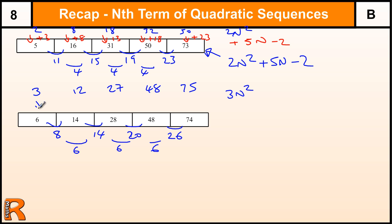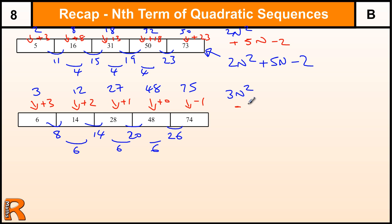Now from here I need to see what I've got to do to get to here. I've got to add 3, add 2, add 1, add nothing, and take away 1. So the sequence in red is going down by 1 each time — that means it's based on minus n. But it's not just minus n, because we actually need to add 4 to minus n to get the red sequence. So our overall formula is 3n squared minus n plus 4, and that's that sequence there.